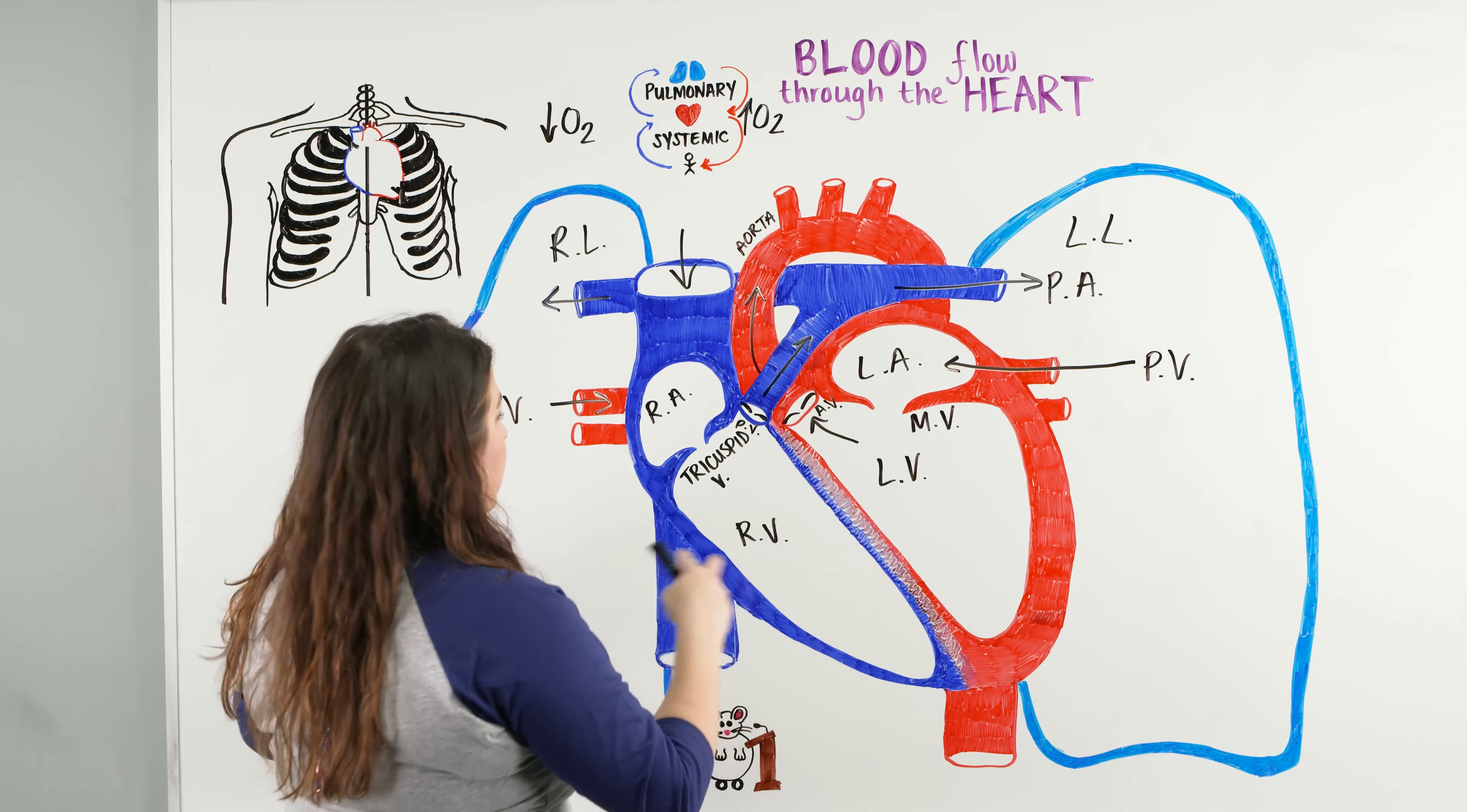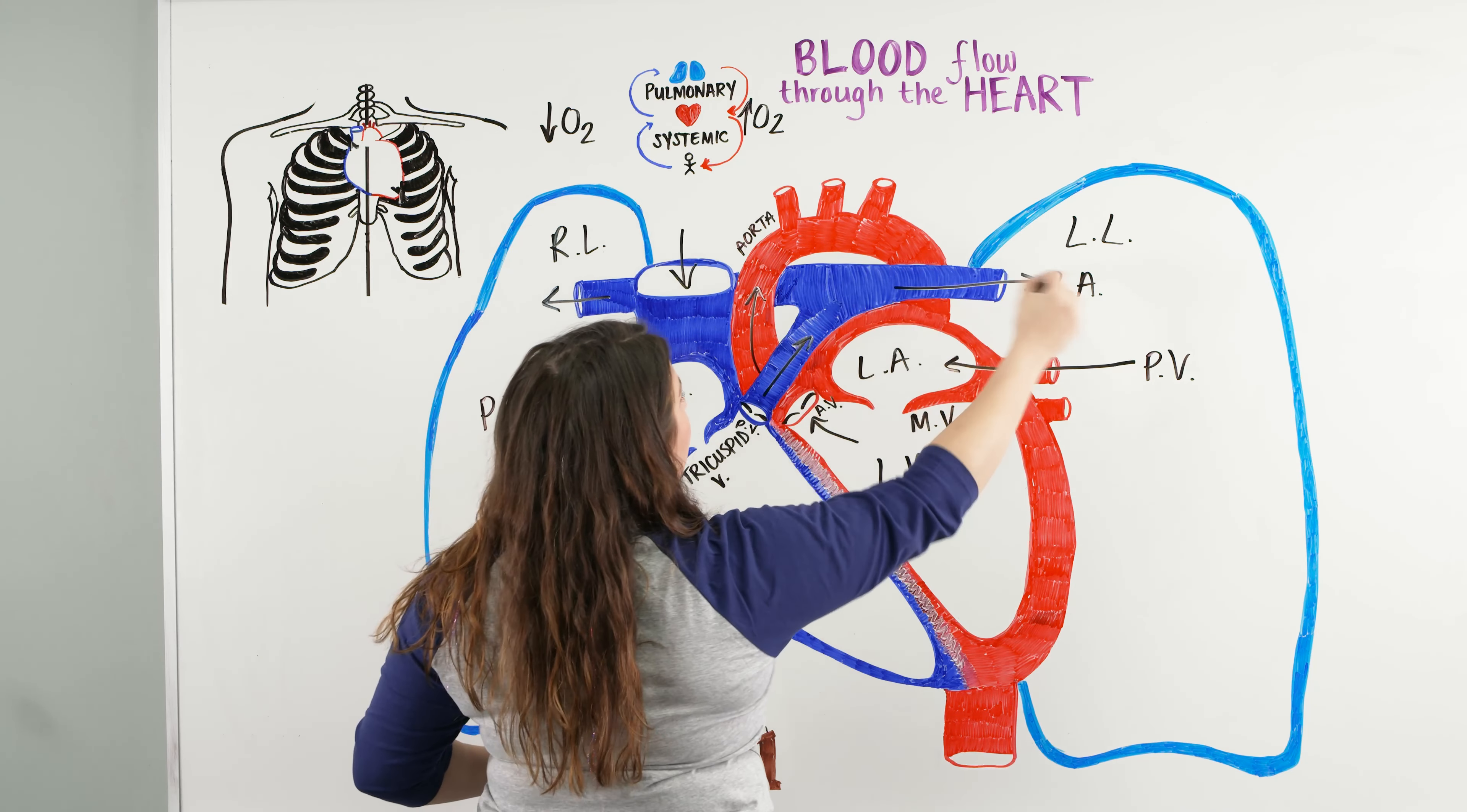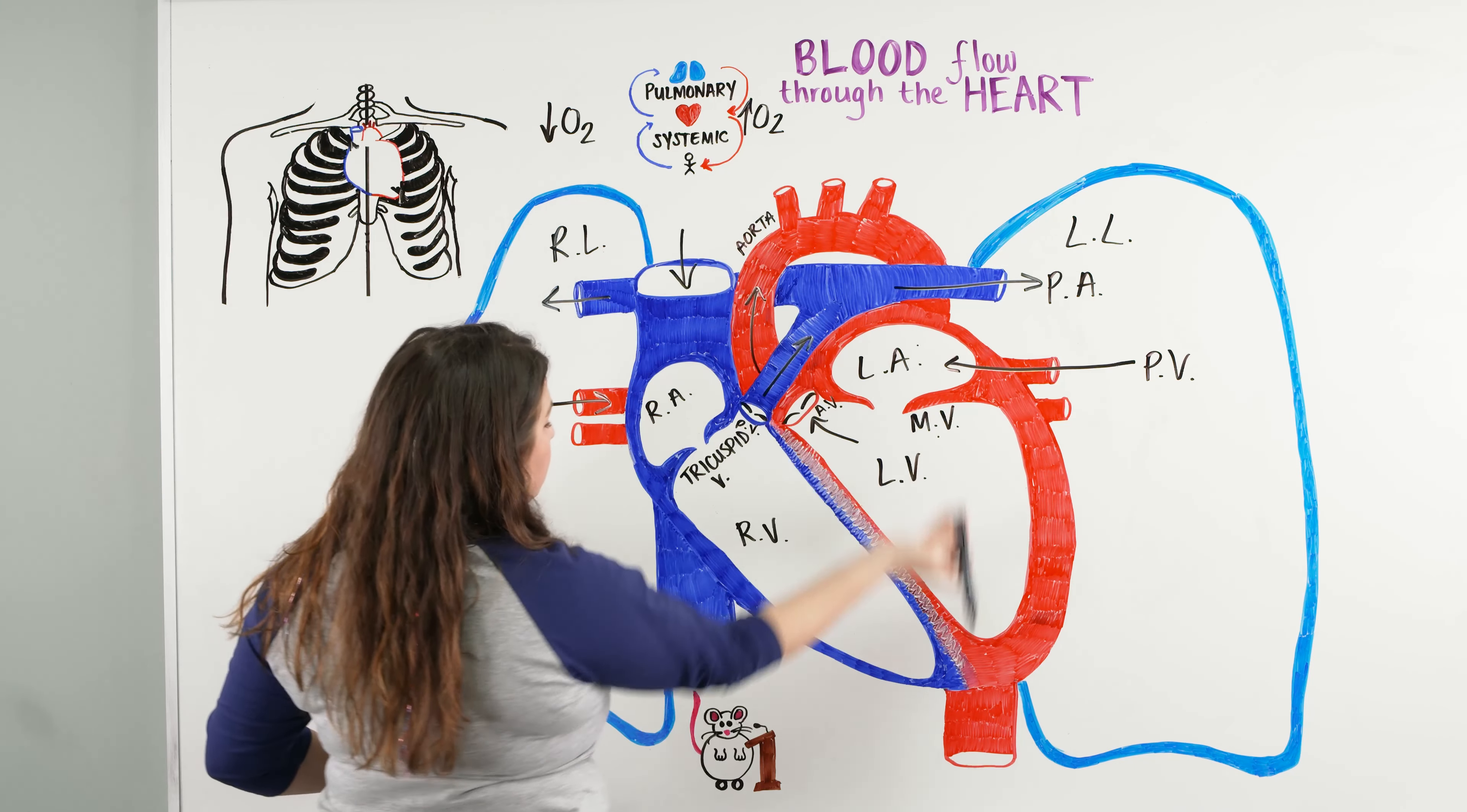Let's try it one more time, just so we get an understanding of it. The blood is coming from the superior inferior vena cava, into the right atrium, through the tricuspid valve, into the right ventricle, and out the pulmonary valve, through the pulmonary trunk, out to the lungs through the pulmonary artery. Once we're in the lungs, we go through the pulmonary vein to the left atrium, through the mitral valve, through the left ventricle, out through the aortic valve, and out the aorta to the rest of the body.